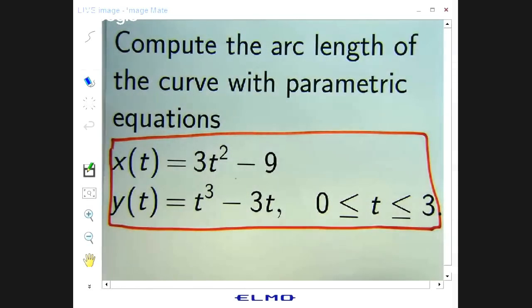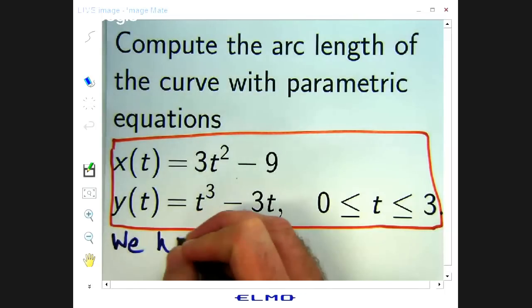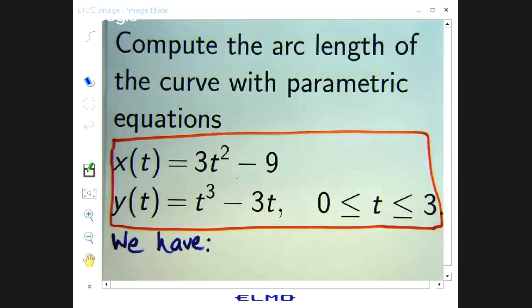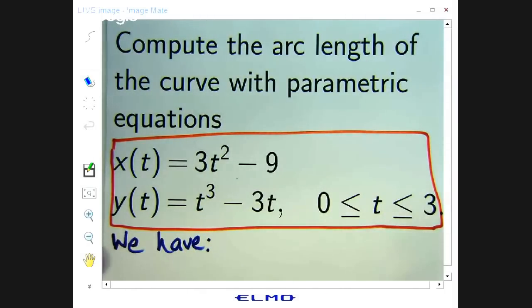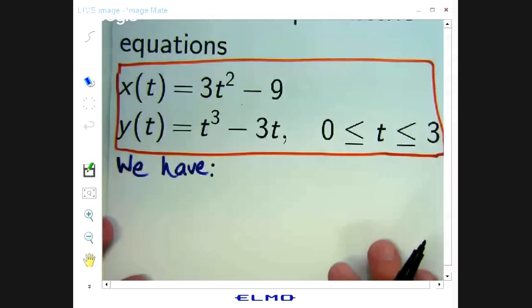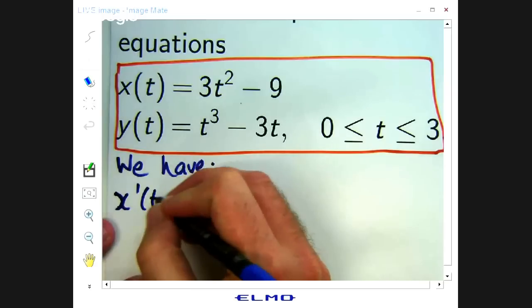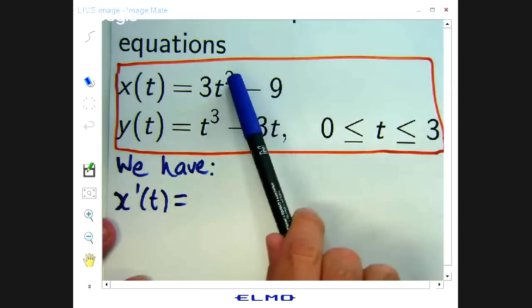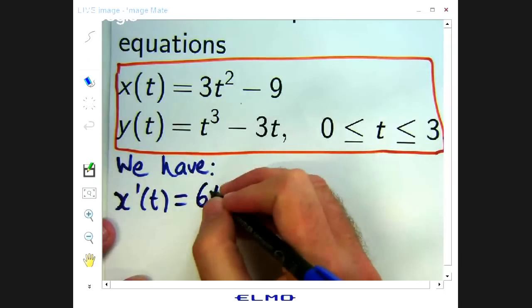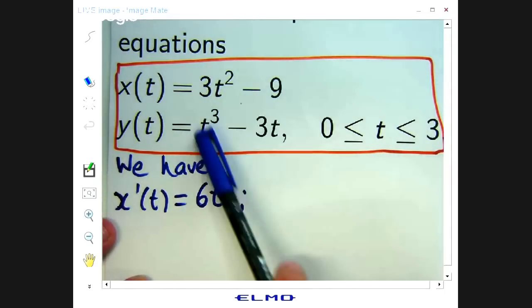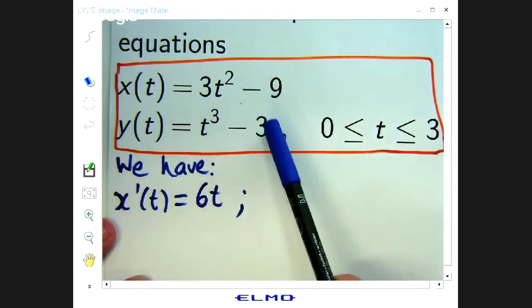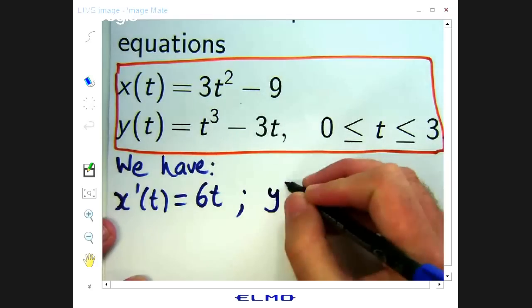So we're going to first off differentiate both of these equations with respect to T. So by dash I mean the derivative with respect to T. So if I differentiate the first one I get 6T. And if I differentiate the second one with respect to T, I'll get 3T squared minus 3.